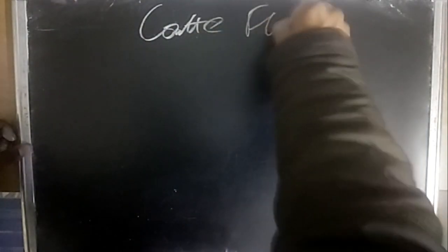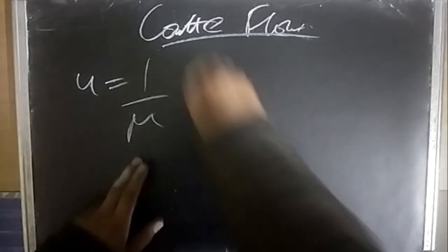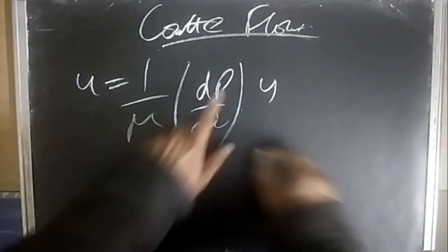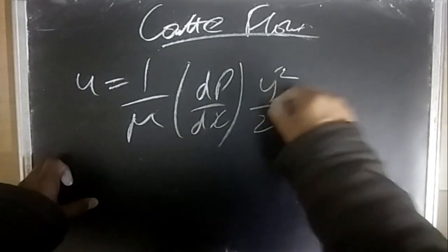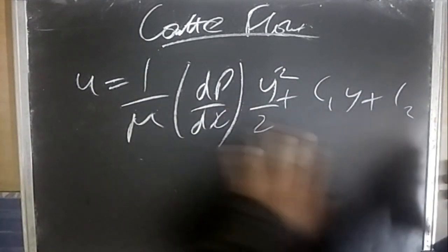For Couette flow, the velocity profile is: u = (1/μ)·(dp/dx)·(y²/2) + C1·y + C2, where C1 and C2 are constants determined by boundary conditions depending on the flow regime.